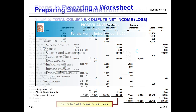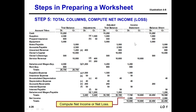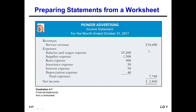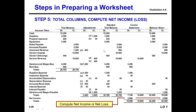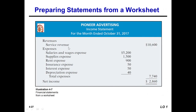Here is the Pioneer Advertising income statement for the month ended October 31st, 2017. There is only one revenue in our income statement column: service revenue of ten thousand six hundred. That is the service revenue — ten thousand six hundred. Now for expenses, from the income statement we have written down service revenue, and now we list the expenses.